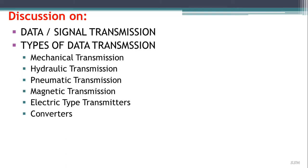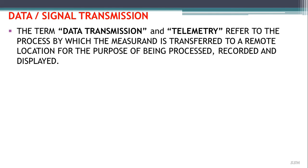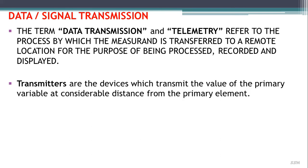We'll start by defining data transmission and telemetry. The term refers to the process by which a measurement is transferred to a remote location for the purpose of being processed, recorded, and displayed. The terms measuring device and transmitter generally go side by side, and it is very difficult to distinguish between them. A measuring device converts a primary indication into some form of energy that can be easily displayed on a scale.